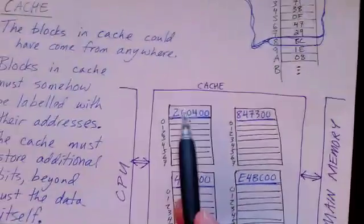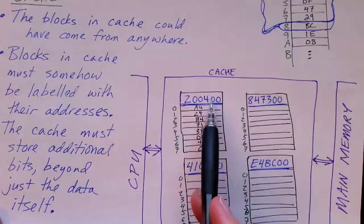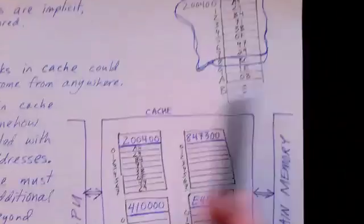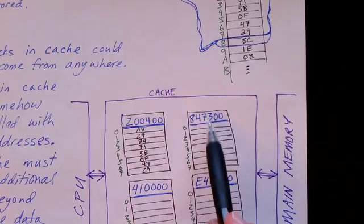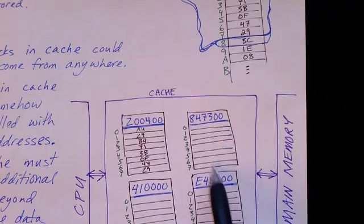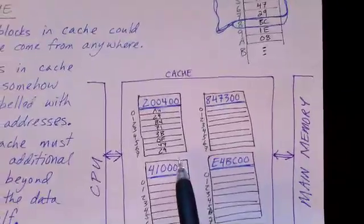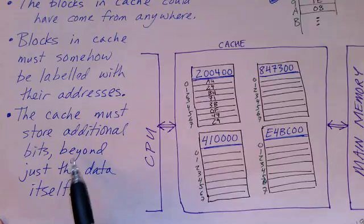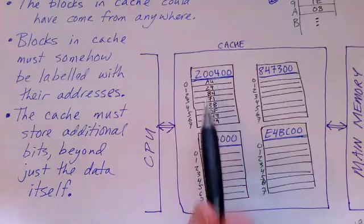We need to associate with each block some additional information to tell where these bytes are coming from. For the entire block we need to have the address of where that block begins — it's eight sequential bytes starting with that address. So the point is that the cache has to store additional bits beyond just the data itself; at minimum it must store the address of where that block comes from.